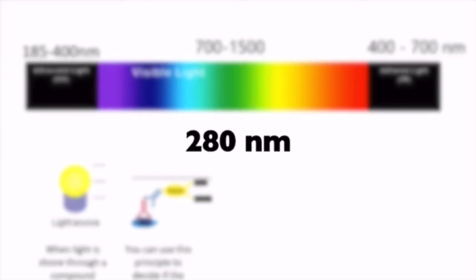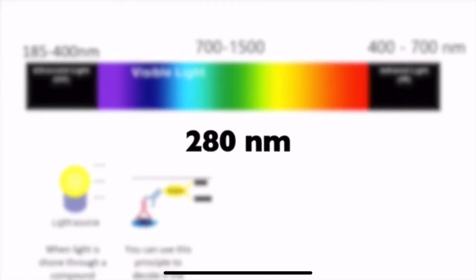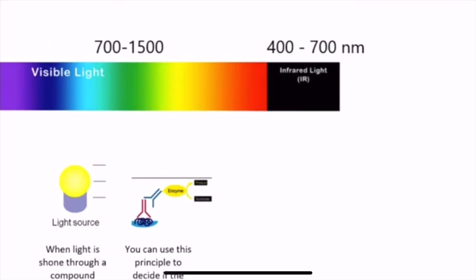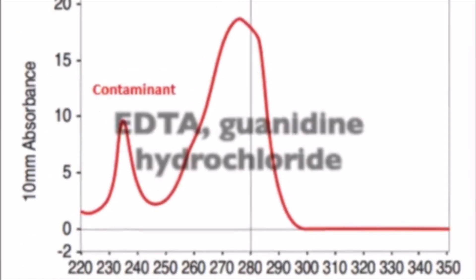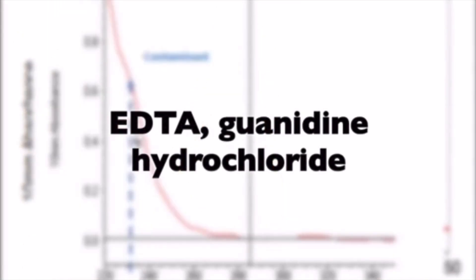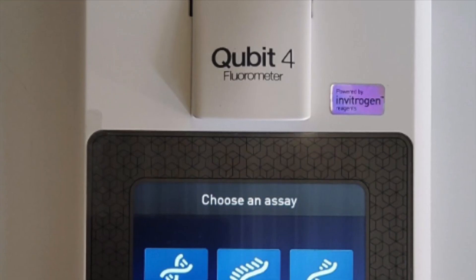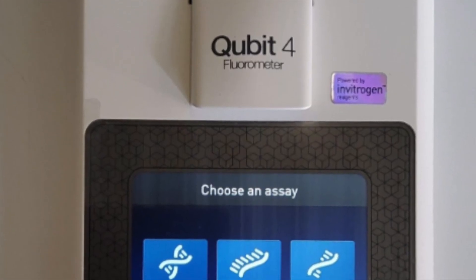Absorbance based on wavelength-specific absorption is usually not that accurate, because you can have interfering compounds that also absorb at that wavelength, inflating your measurement, or contaminants that interfere with the actual concentration. So the alternative is often to use a fluorescence-based measurement.